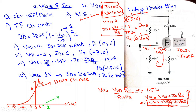P2 is at VGS = 0 and ID = 2 mA. Drawing a straight line through P1 and P2 and extending it gives the network equation curve, also called the load line curve.